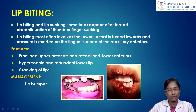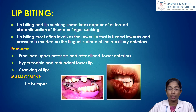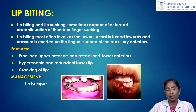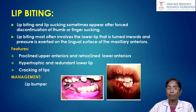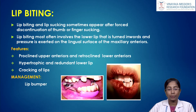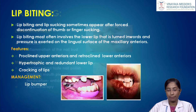Lip biting or lip sucking sometimes appears after forced discontinuation of thumb or finger sucking. It most often involves the lower lip turned inwards, with pressure exerted on the lingual surface of the maxillary anteriors. It is most commonly seen in Class II Division I malocclusion patients, and lip trap is the common clinical sign. Clinical features include proclined upper anteriors, retroclined lower anteriors, hypertrophic and redundant lower lip, and cracking of the lips. Management uses a lip bumper.